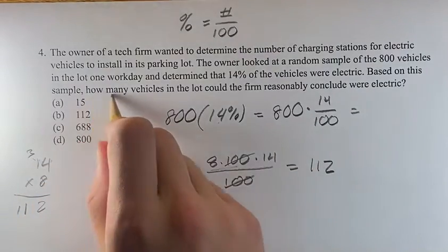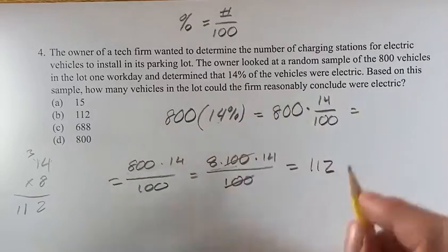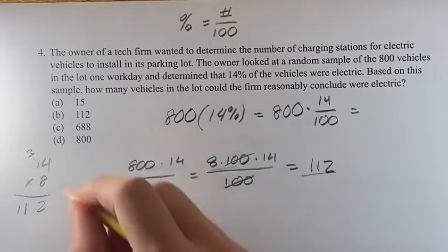It's the number of vehicles in the lot that could be reasonably concluded to be electric. 112 is answer B.